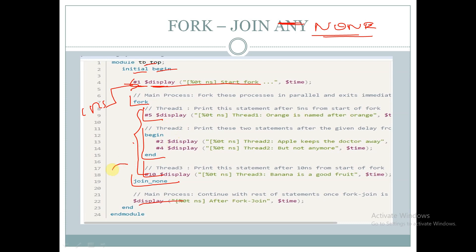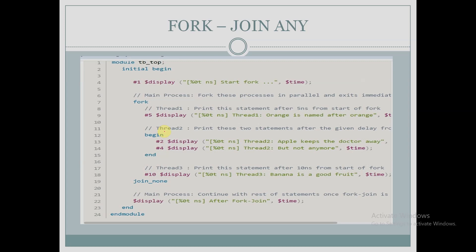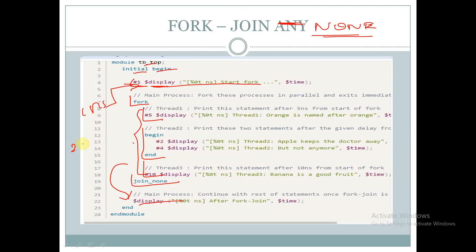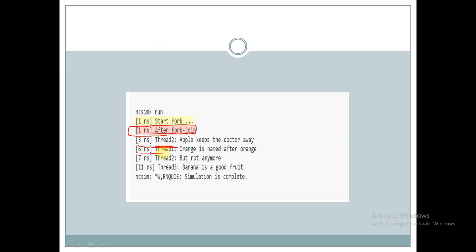Since fork-join-none comes out irrespective of whether any statement inside it has been executed, at one nanosecond itself it comes out of the fork-join-none process and we get 'after fork-join.' Then at three nanoseconds we get thread two's first statement, at six nanoseconds thread one, at seven nanoseconds thread two's second statement, and at eleven nanoseconds thread three. So at three nanoseconds thread two, six nanoseconds thread one, seven nanoseconds thread two, and eleven nanoseconds thread three. This is the working of fork-join-none.